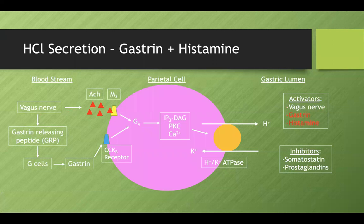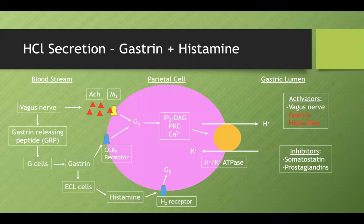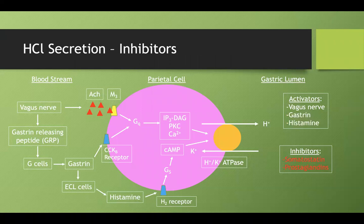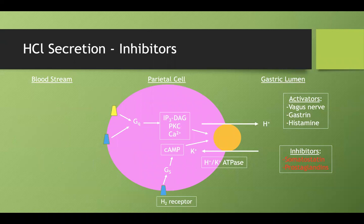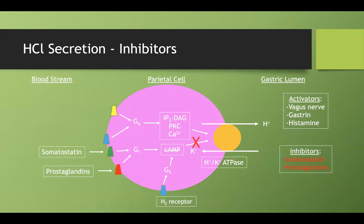The histamine pathway is another route: gastrin activates ECL cells to produce histamine, which binds to H2 receptors, activating a Gs protein cascade that increases cyclic AMP and ultimately activates the H+/K+ ATPase. Inhibitors — such as somatostatin — bind to Gi-coupled receptors, which inhibit cyclic AMP and reduce hydrogen ion secretion.